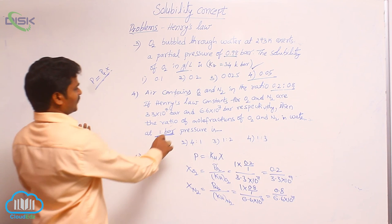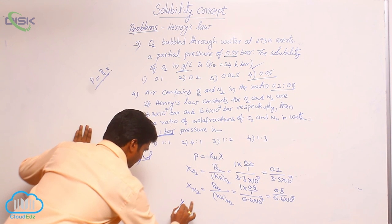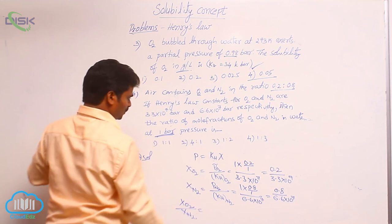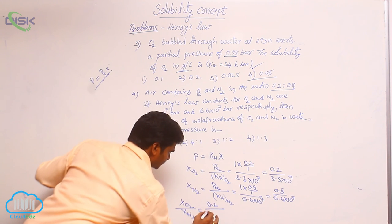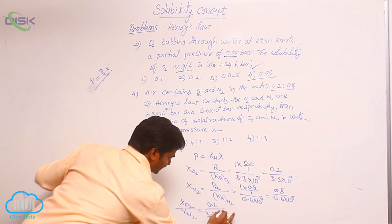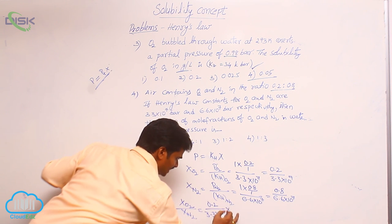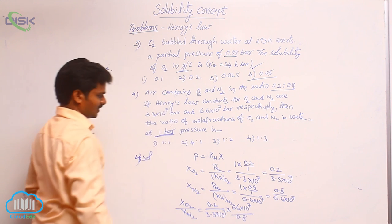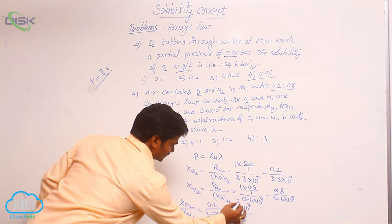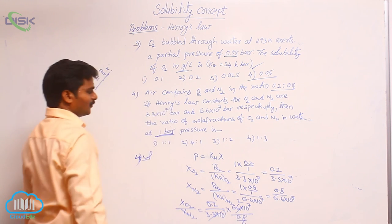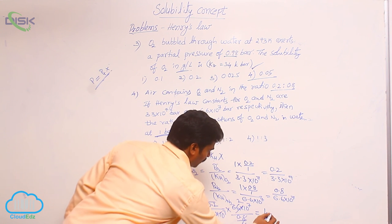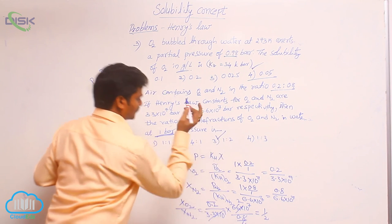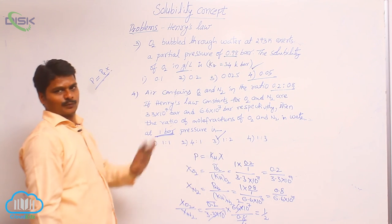The question asks for the ratio of mole fractions of O2 to N2. So mole fraction of O2 by mole fraction of N2 equals (0.2 by 3.3 into 10 power 7) divided by (0.8 by 6.6 into 10 power 7). Simplifying: 6.6 by 3.3 gives 2, and 0.2 by 0.8 gives 1 by 4, so the ratio is 2 by 4, that means 1 by 2. The ratio is 1 is to 2, which is the third option.